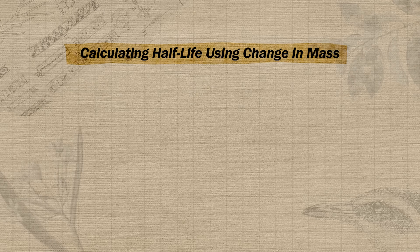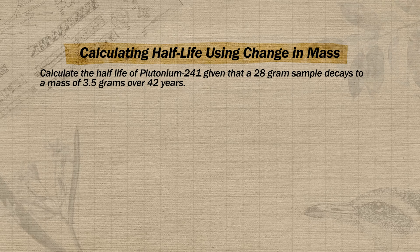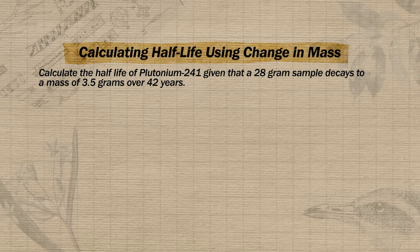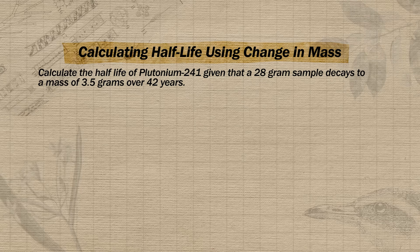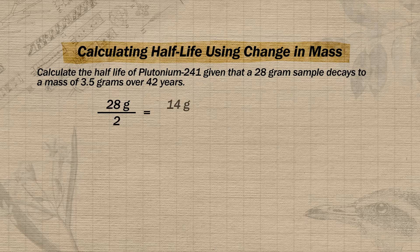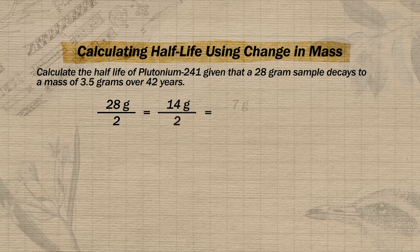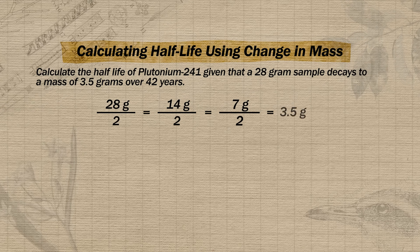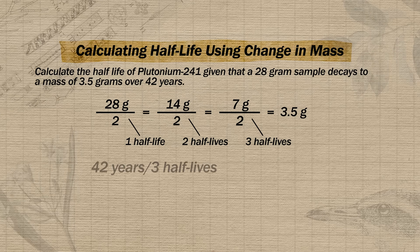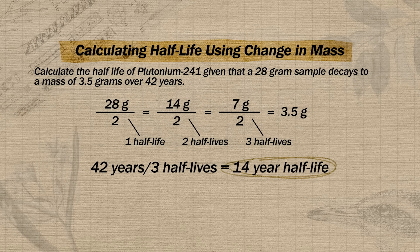You may also be given the change in mass over a period of time and asked to calculate the half-life. For example, a 28-gram sample of plutonium-241 has a mass of 3.5 grams after 42 years. We determine how many times the sample was cut in half: 28 → 14 → 7 → 3.5 grams, which is three halvings. Dividing 42 years by 3 gives us a half-life of 14 years.